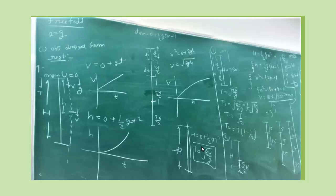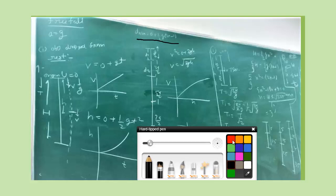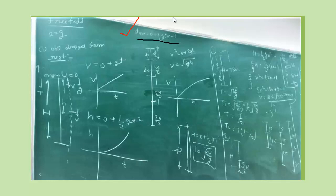Next, free fall object drop from rest case, nth second displacement. I have told that free fall is uniform acceleration case. For uniform acceleration of any case, we have nth second displacement. dnth is equal to u plus half a times 2n minus 1. Since we have dropped from rest, u is zero. So dnth equals half g times 2n minus 1. Now the half is constant, g is constant.